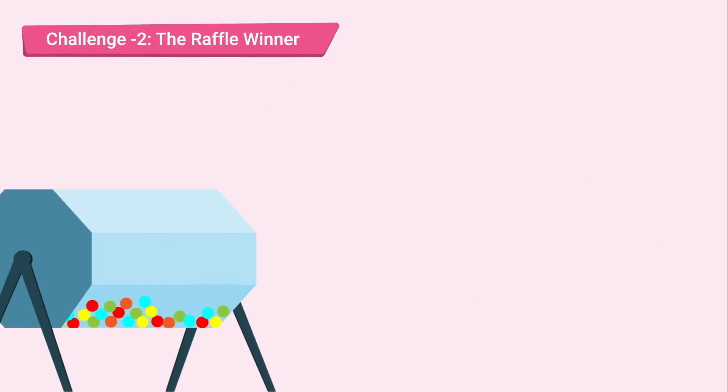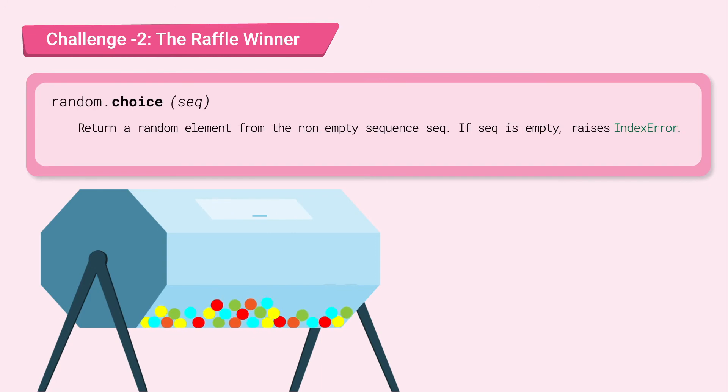Challenge 2. We need to pick a raffle winner. The random.choice function looks useful. According to the documentation, this function takes one parameter of a sequence type, such as a list, and returns or gives back a random element from the given list.